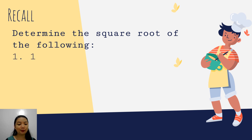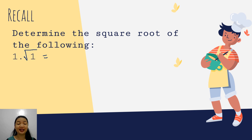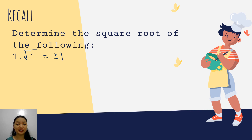For example, we have 1. So what is the square root of 1? To simply get the square root, we find a number wherein when it is multiplied by itself, the answer is 1. So we have positive and negative 1. In the square root, it is always positive and negative.